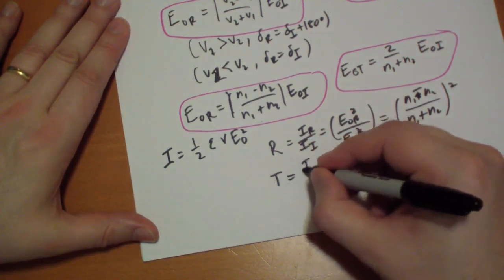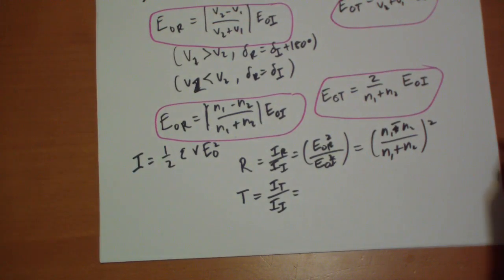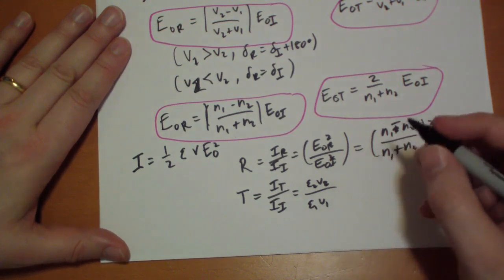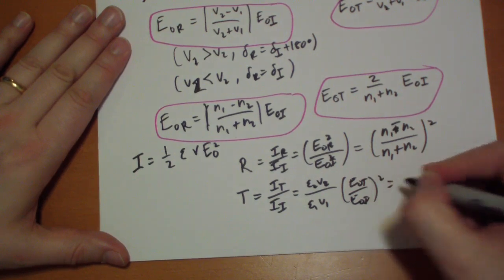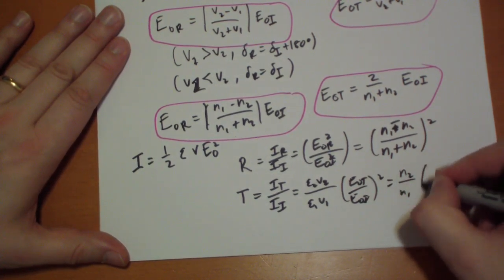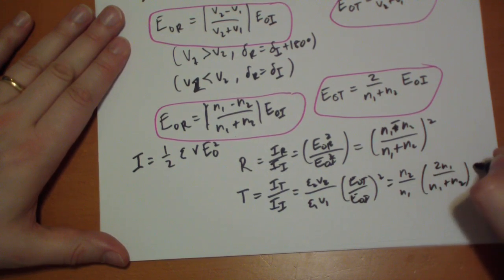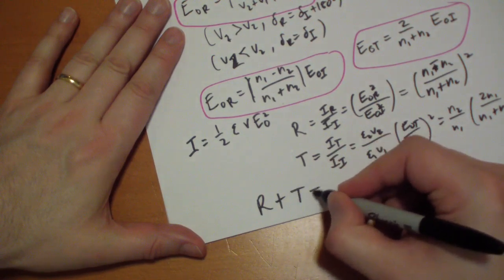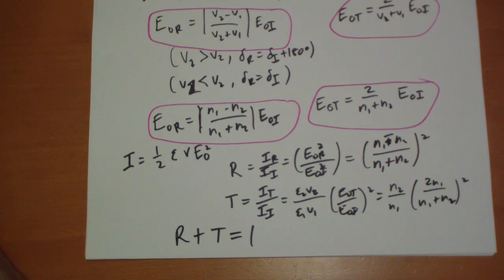For the transmission coefficient, that's just the intensity of the transmission divided by the intensity of the incident. That's a little more complicated. We have epsilon 2 V2 over epsilon 1 V1 times E naught t over E naught i, and all that squared. And that can simplify down to N2 over N1 times 2N1 over N1 plus N2 squared. That's the coefficients there. And as a little algebra exercise, you can prove for yourself that R plus T has to equal 1, that the reflection and transmission has to equal 1.